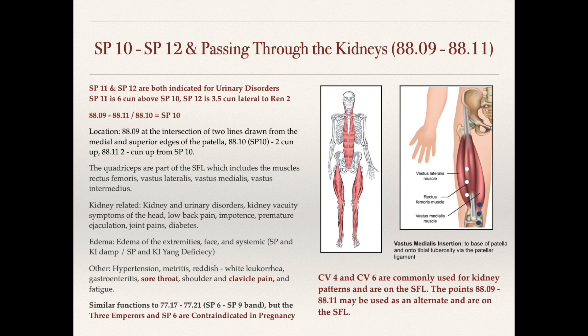Following the line up, spleen 12 is located three and a half sun lateral to ren 12 on the superior border of the symphysis pubis. On the interior side, the bladder is in close proximity, which is likely why these points are indicated for kidney and urinary conditions. This area is just under the rectus abdominis, and in the abdominal region the bladder is located nearby.